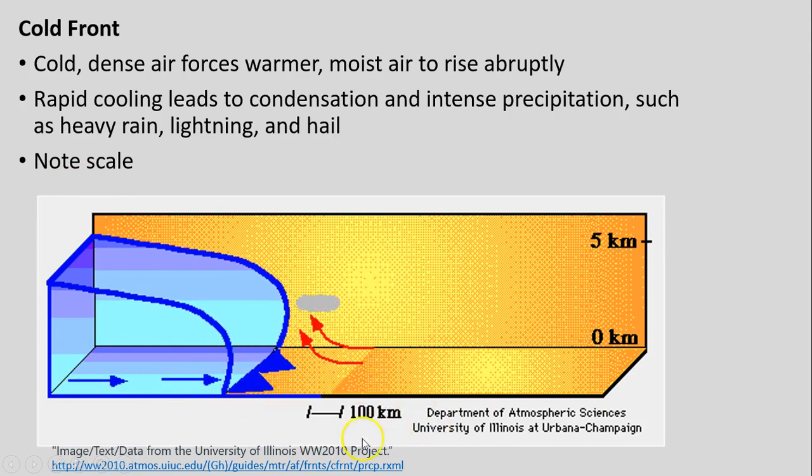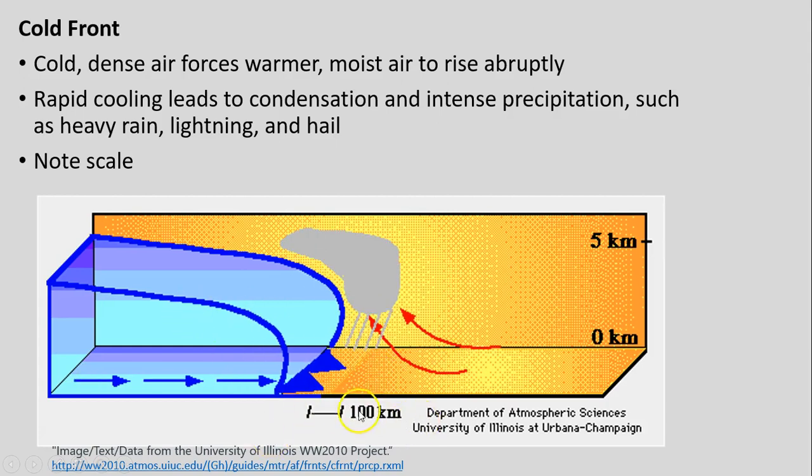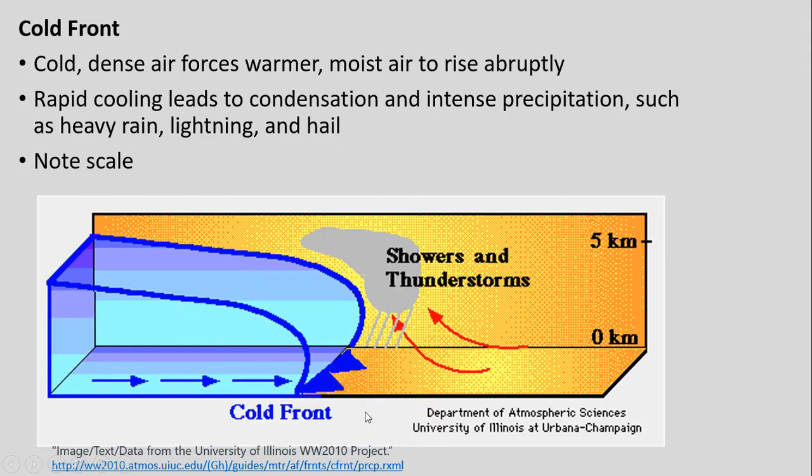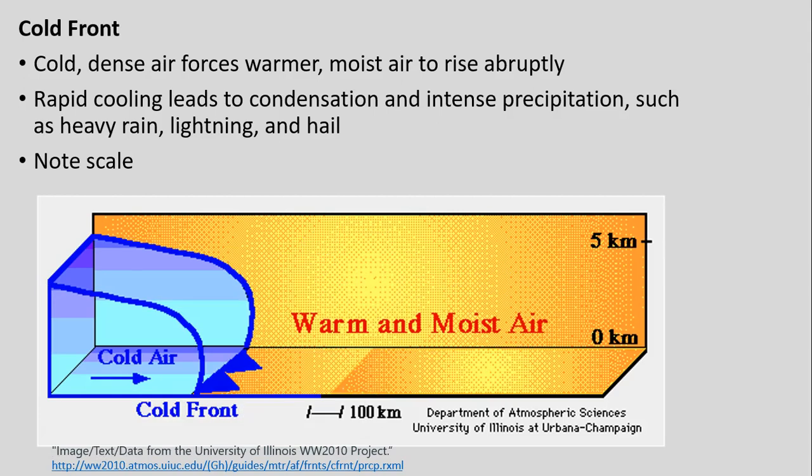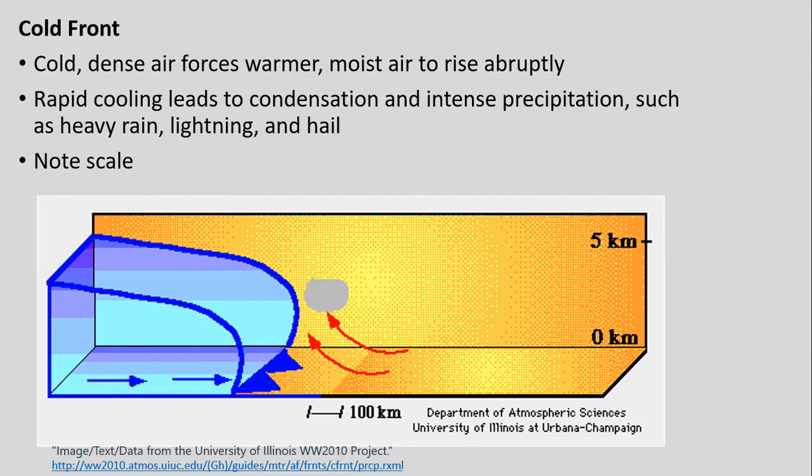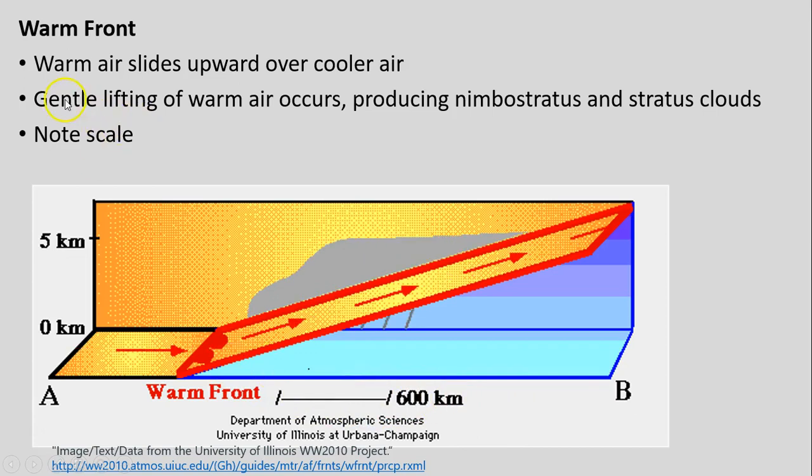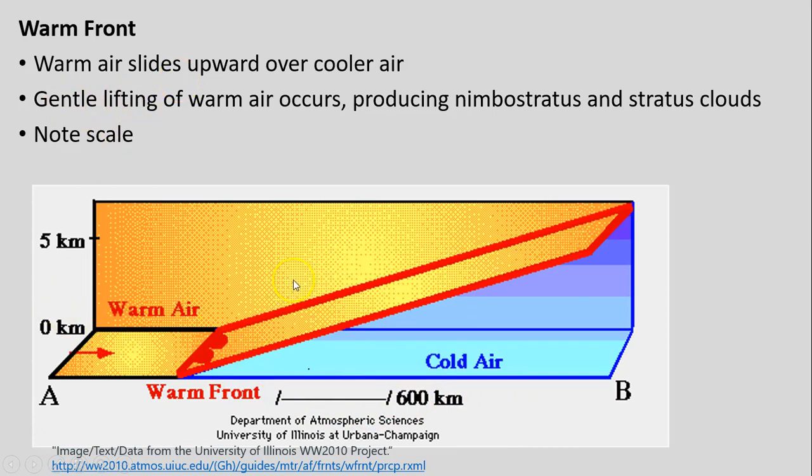On the bottom here, you can see this 100-kilometer scale. These are occurring over tens to just about 100 kilometers or low hundreds of kilometers of values. These really aren't as spatially extensive as our warm fronts. We can see in contrast the scale is over several hundred kilometers. This is where warmer air is gliding upward over relatively stable and in-position cooler air.